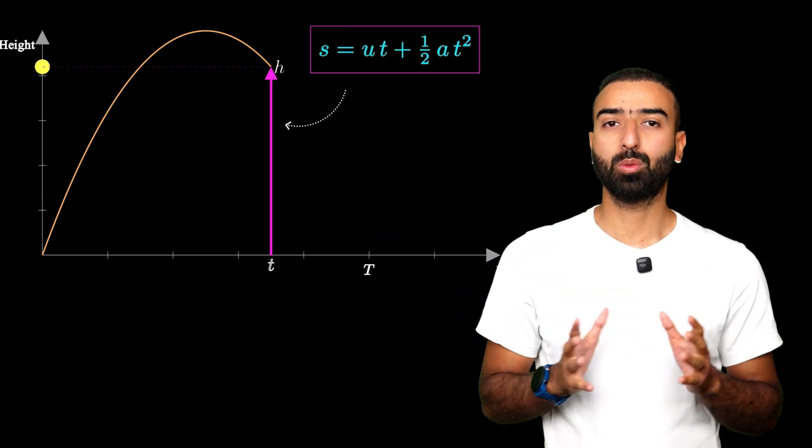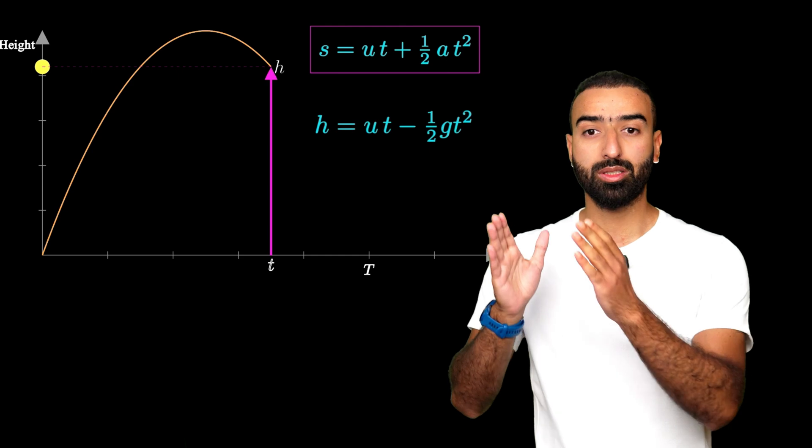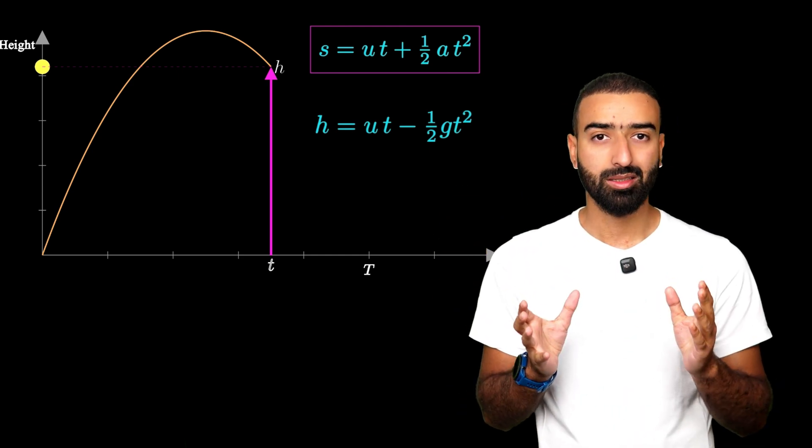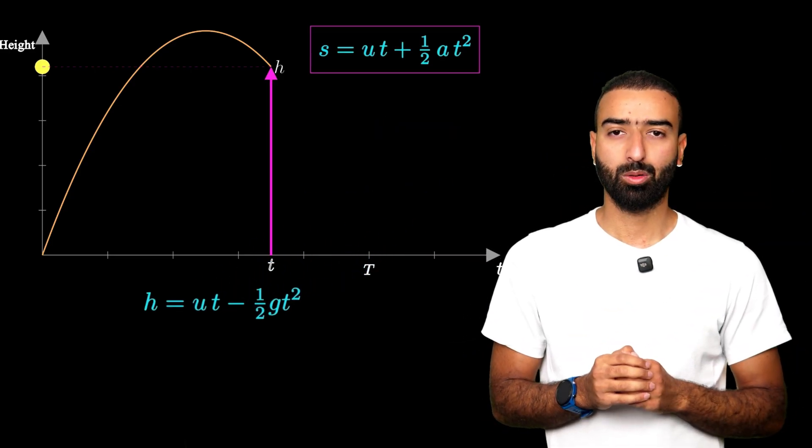If we do that, what would we get? Well, the equation we would get is H equals UT minus half GT square. Minus simply because gravity is pointing downwards and is negative. Great.